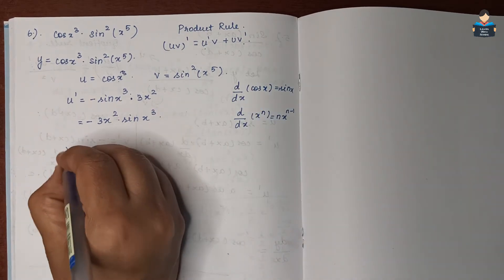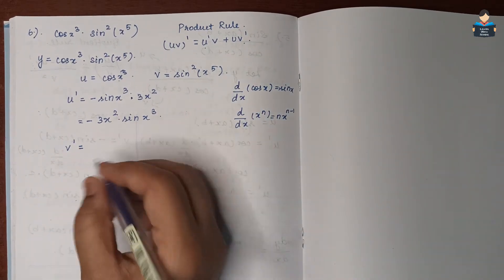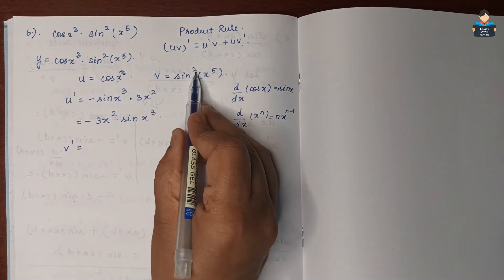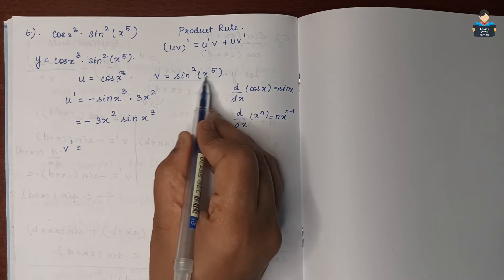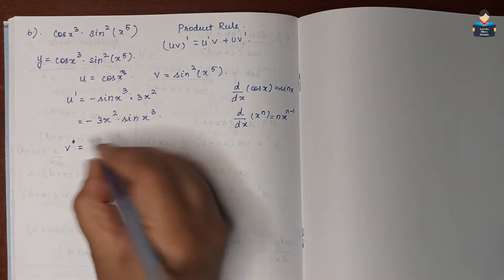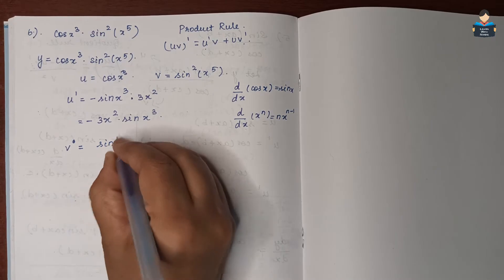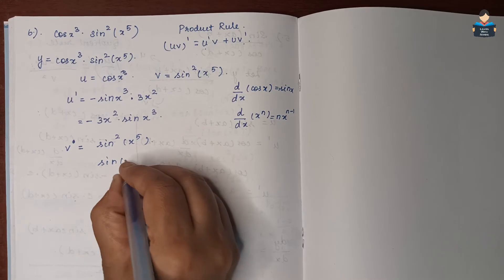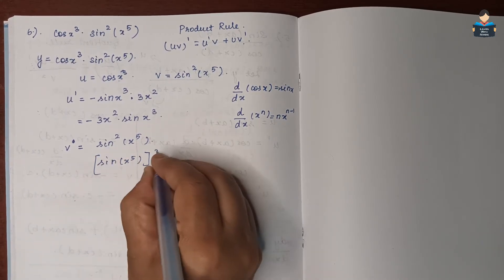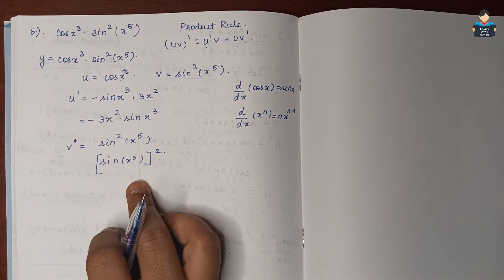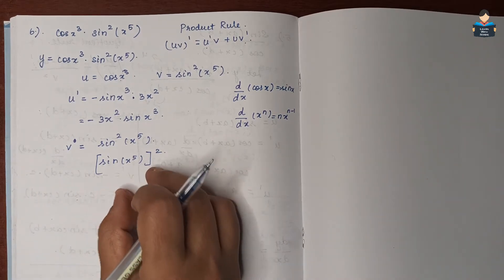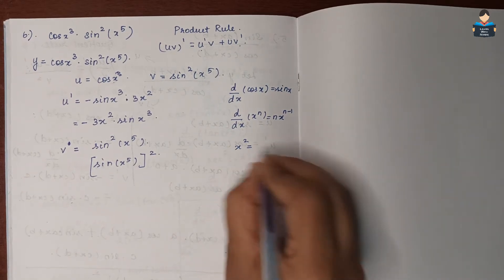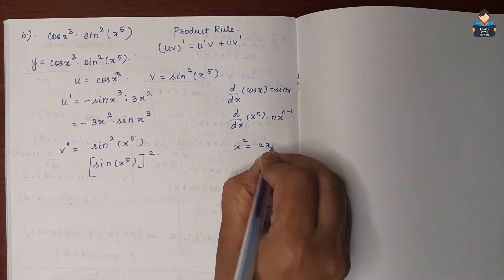Now for v', where v equals sin²(x⁵). We can write this as (sin(x⁵))². Differentiating x² gives 2x, so we apply the chain rule. The outer function x² differentiates to 2x.